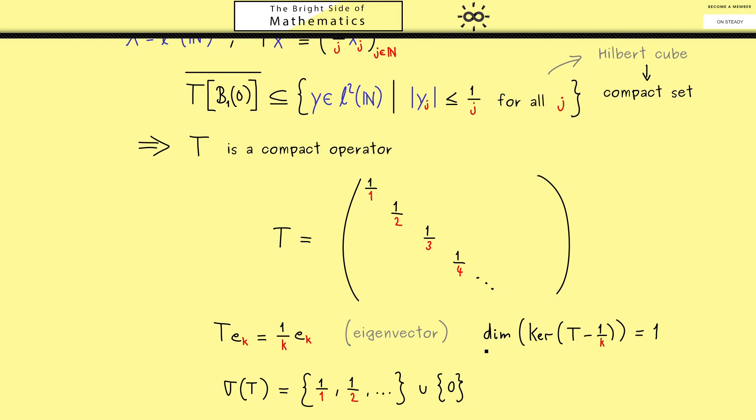And indeed in this case we see this one is the point spectrum and 0 is the continuous spectrum. However of course you see this was an easy example because the operator T was given in this diagonal structure. This is something that is also easy to deal with when you have matrices. Therefore you might recall from linear algebra that diagonalization is an important tool to deal with other matrices. And indeed we can do a similar thing for compact operators.